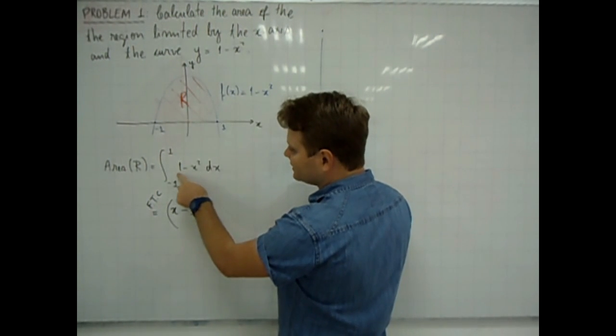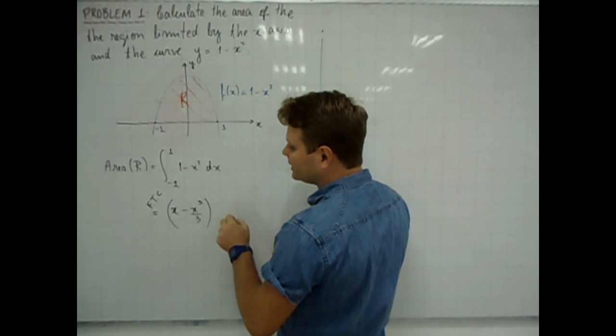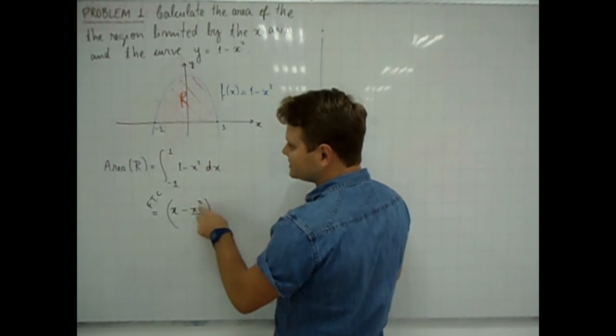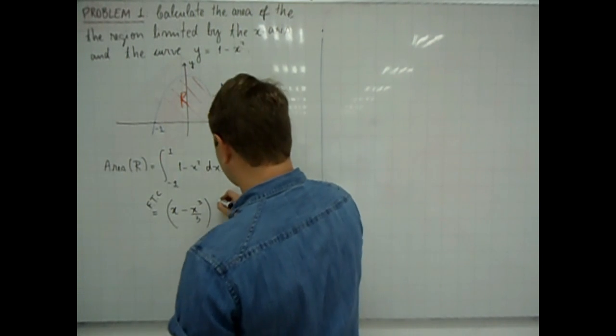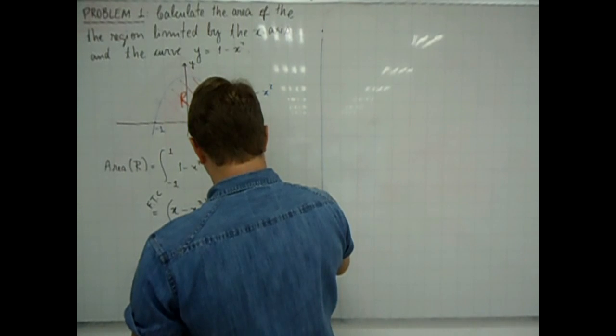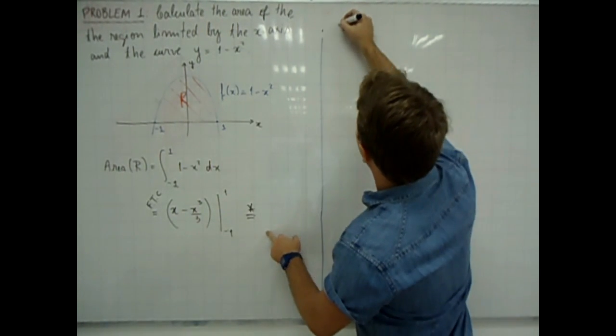If I look at it, the derivative of x is equal to 1 and the derivative of minus x cubed divided by 3 is equal to minus x squared. And we use this notation for the following.